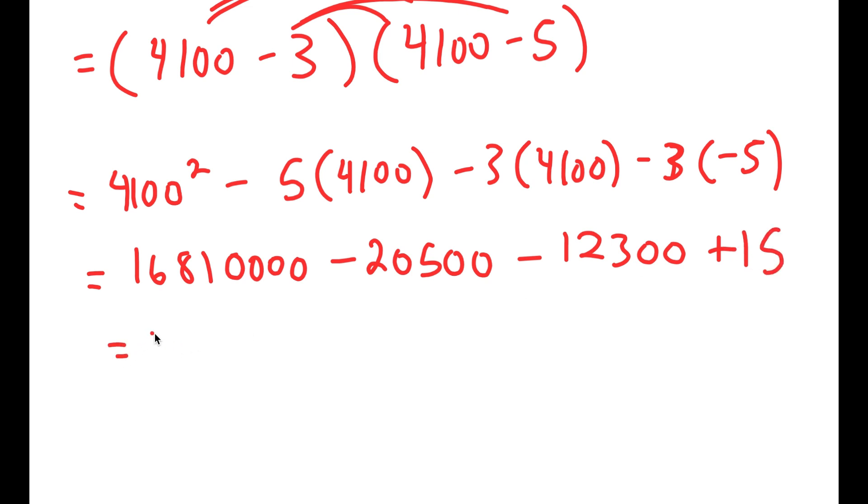So now, from here I get 16,810,000 minus 20,500 minus 12,300, which is equal to negative 32,800 plus 15.